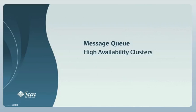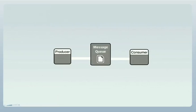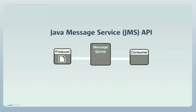Message Queue is an enterprise-strength messaging system that allows applications to exchange data and other information. Message Queue implements the Java Message Service API, an industry standard for reliable, asynchronous messaging.